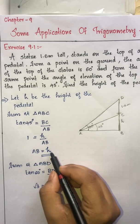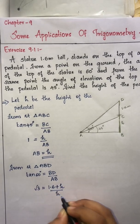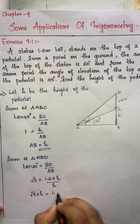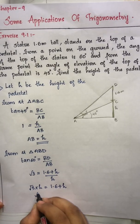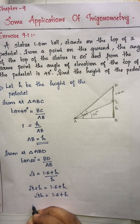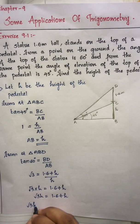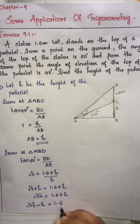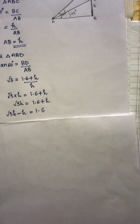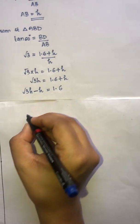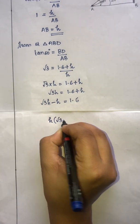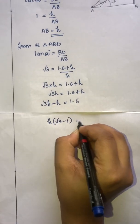Since AB equals h, we get root 3 times h equals h plus 1.6. Rearranging, root 3 h minus h equals 1.6, so h times (root 3 minus 1) equals 1.6.